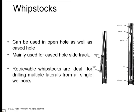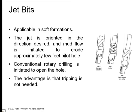The whipstock is mainly used in cased hole; some are retrievable and some are permanent. You orient your tool inside the casing from where you want to deviate, set a bridge plug at a particular depth, and run a milling assembly above it that will continue to drill and sidetrack at a particular point. For jet bit application in soft formations, you plug one nozzle, orient the BHA to the desired direction, and sidetrack.